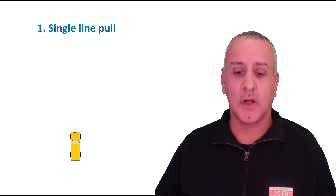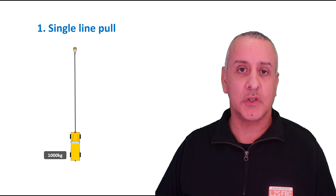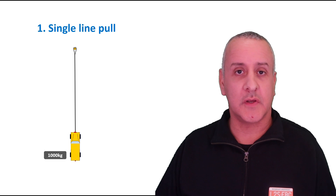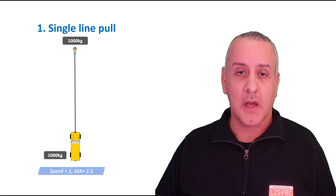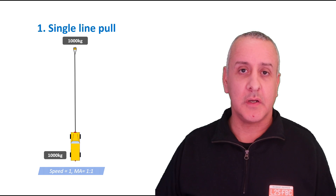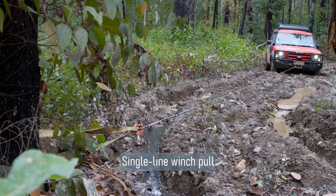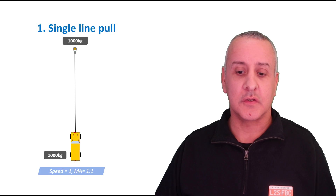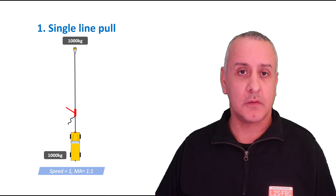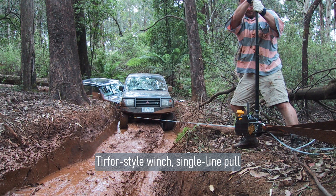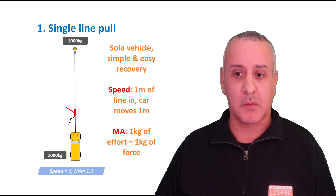The first rig is a single line pull. We've got a stuck vehicle and an anchor point — we just run a winch line straight out to it. We'll assume the vehicle takes a force of a thousand kilograms to move. There's also simply a thousand kilograms on the anchor point. This gives us a speed of one and an MA of one-to-one: for every metre of line the winch pulls in, the vehicle moves one metre forwards, and every kilogram of force the winch produces moves the vehicle one kilogram forwards. You can also use a hand winch — a Tirfor-style or high-lift — and the principle is exactly the same.